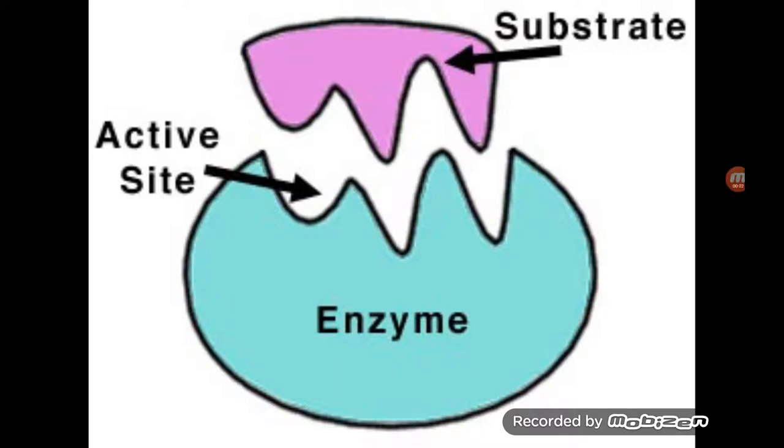One minute on enzymes. The key to enzymes is that they are all about shape - you need a specific active site shape that fits a specific substrate shape. Keywords: active site, substrate, and fitting together like a lock and key.